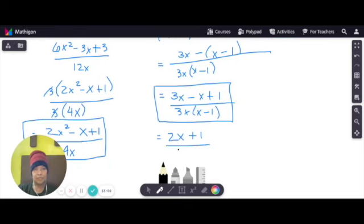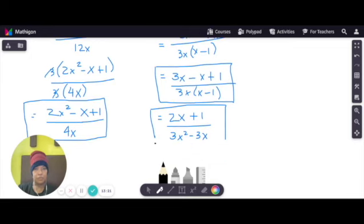I-multiply ko na itong baba. It will become 3x squared minus 3x. Yan na po yung final answer talaga.